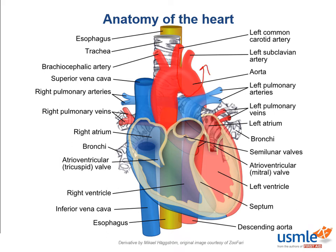The left recurrent laryngeal nerve loops under the ligamentum arteriosum on the way back to the head. In a woman with long-standing mitral stenosis, we would have chronically elevated pressures in the left atrium due to mitral valve stenosis. Eventually the left atrium increases in size until it starts compressing surrounding structures, including impingement of the left recurrent laryngeal nerve, which innervates the intrinsic muscles of the larynx — so compression of it would cause hoarseness.